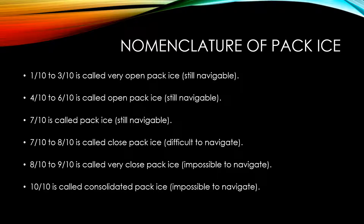In terms of nomenclature of pack ice: 1/10 to 3/10 is called very open pack ice, in which the vessel may still navigate. 4/10 to 6/10 is called open pack ice, where the vessel may also navigate. A ratio of 7/10 is called pack ice. 7/10 to 8/10 is called close pack ice, where vessels may find it difficult to navigate. Very close pack ice at 8/10 to 9/10, or consolidated pack ice at 10/10, makes it impossible for vessels to navigate.